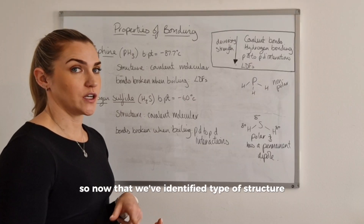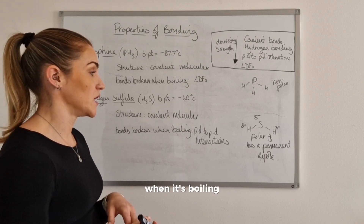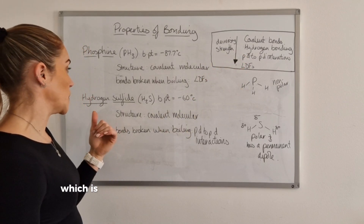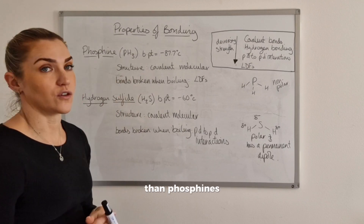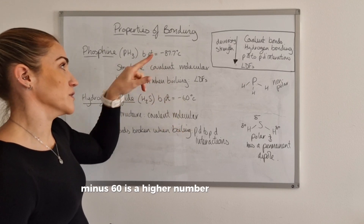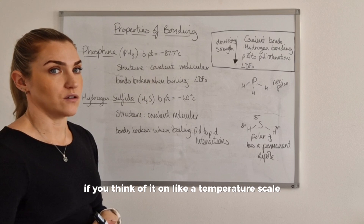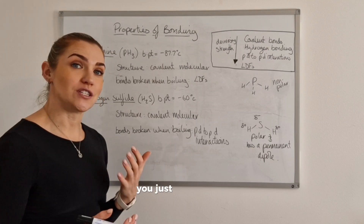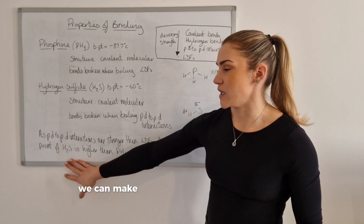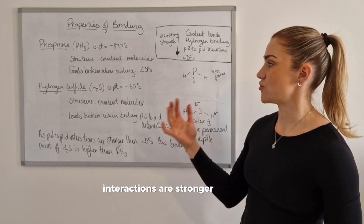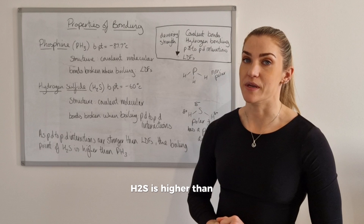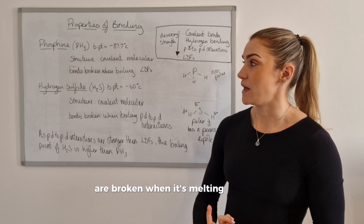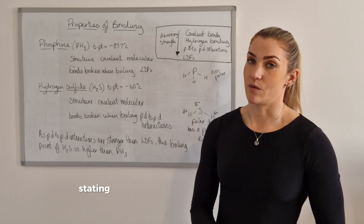Now that we've identified the structure and the type of attraction broken when boiling, we can make our comparison statement. Permanent dipole-to-permanent dipole interactions are stronger than London dispersion forces, which is why hydrogen sulfide's boiling point is higher than phosphine's. Don't let the negative numbers confuse you — minus 60 is a higher number than minus 87.7 on a temperature scale. So our comparative statement is: as permanent dipole-to-permanent dipole interactions are stronger than LDFs, the boiling point of H₂S is higher than that of PH₃.